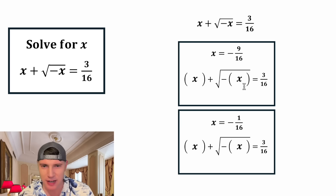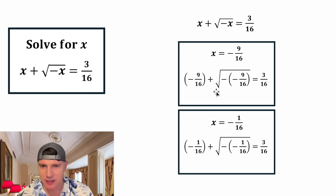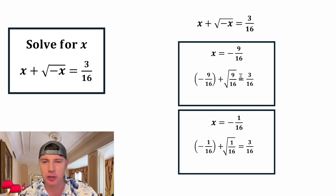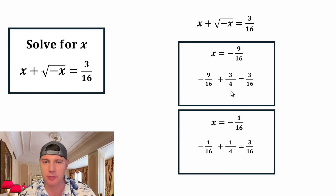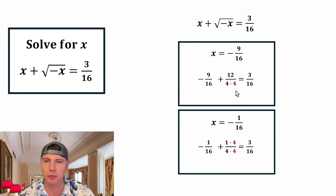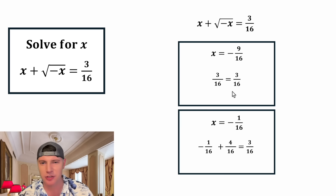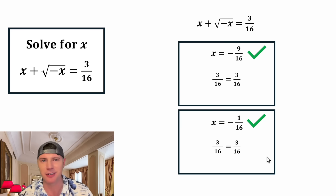Let's test them out. For x equals negative 9 sixteenths, we plug in and the negatives inside the square root cancel. The square root of 9 sixteenths is 3 fourths. To add the fractions, we give them a common denominator of 16: negative 9 sixteenths plus 12 sixteenths equals 3 sixteenths. This one checks out. For x equals negative 1 sixteenth, similarly negative 1 sixteenth plus 4 sixteenths is also 3 sixteenths. This one also checks out. So these are the answers to this question.